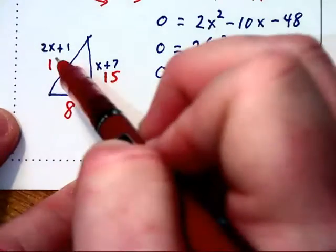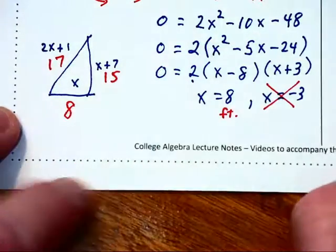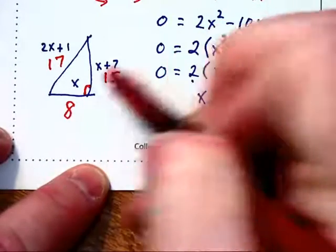That'll be 2 times 8, which is 16 plus 1, which is 17. And those are the three sides of our right triangle.